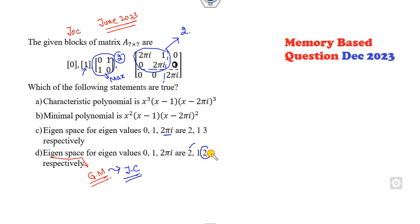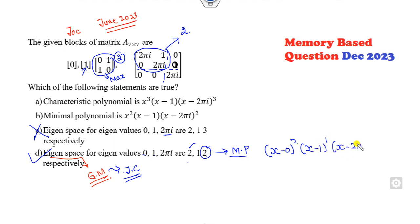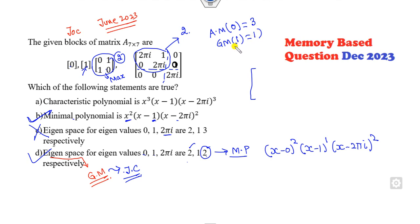The block of size 2 confirms those answers. Since we know the geometric multiplicities, we can determine the minimal polynomial: corresponding to eigenvalue 0 it is raised to power 2, and to eigenvalue 2πi raised to power 2. The minimal polynomial is therefore (λ)²·(λ − 2πi)². For the characteristic polynomial, the algebraic multiplicity of 0 is 2+1 = 3, geometric multiplicity of 1 is just 1, and algebraic multiplicity of 2πi is 3. So the characteristic polynomial is λ³·(λ − 2πi)³. Options A, B, and D are correct.